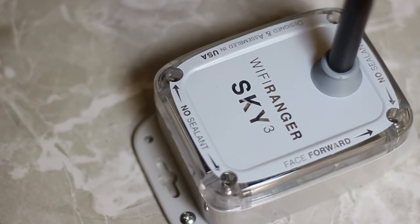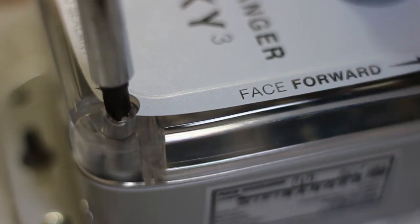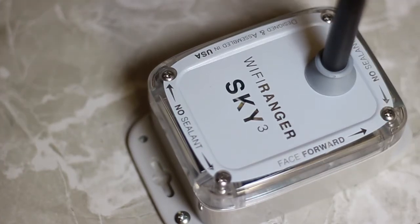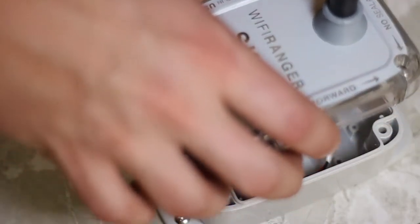Begin by unscrewing the lid from the failed Sky 3 using the Philips size 2 head. Carefully remove the lid.